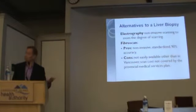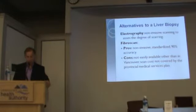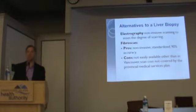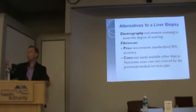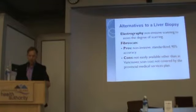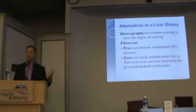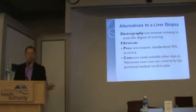You've probably heard about elastography. This is an alternative to liver biopsy — a non-invasive scanning method to assess the degree of scarring. It's called FibroScan, and you can think of it as sort of like an ultrasound. It's non-invasive, it's standardized, and it has about 90% accuracy in terms of measuring the amount of scarring.